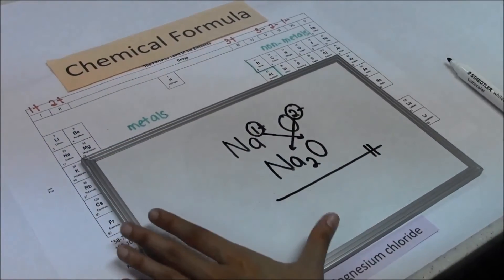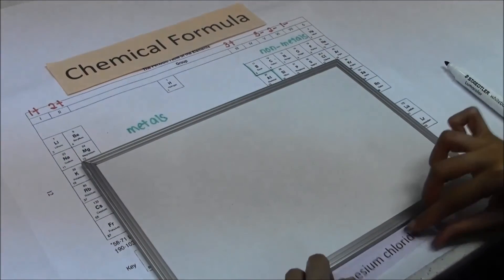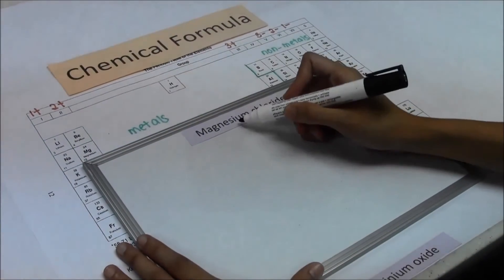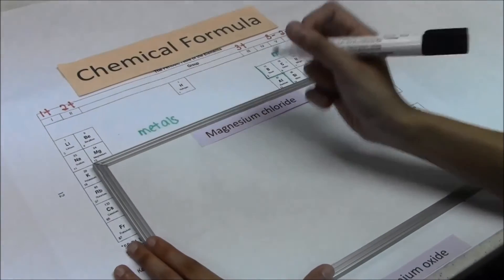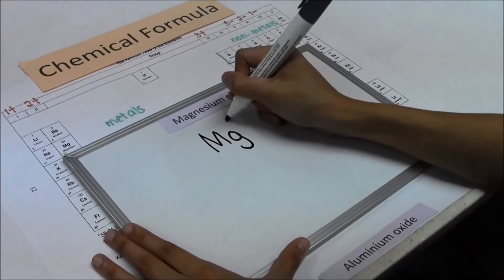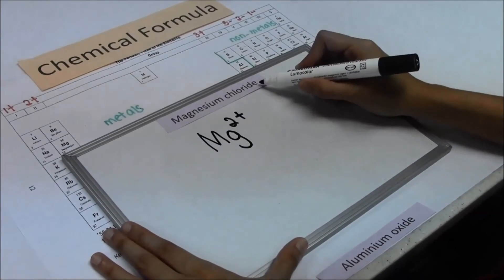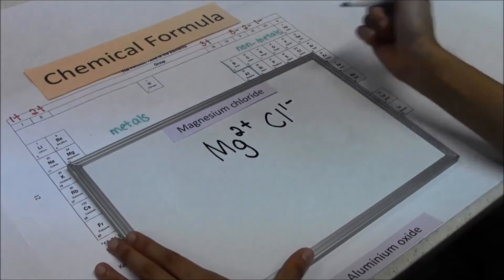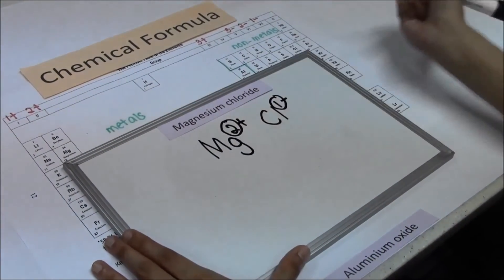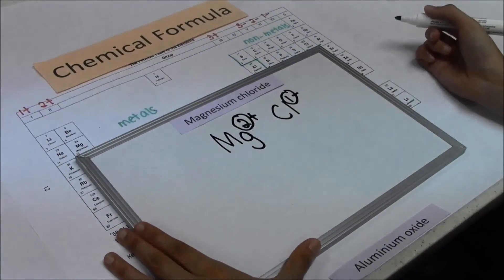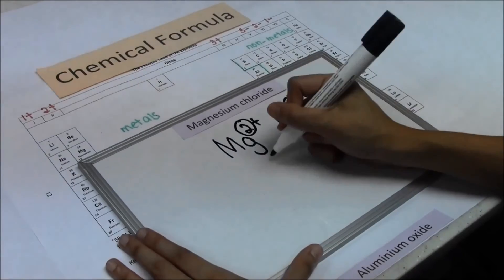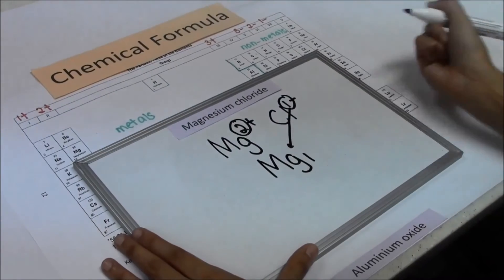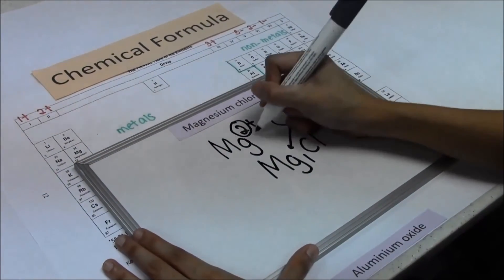Next example: magnesium chloride. Find magnesium on the periodic table and write down the working. Chloride comes from chlorine. Circle the number on the charge. The numbers are not the same, so you cannot cancel. Cross multiply: Mg will follow the number, and Cl will follow the number.